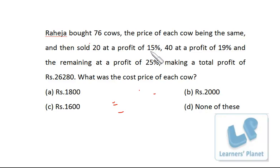That means 115 rupees, or I can say 15 rupees profit he is earning on each cow. So 20 cows, 15 rupees each, that means the total profit is 300 rupees.